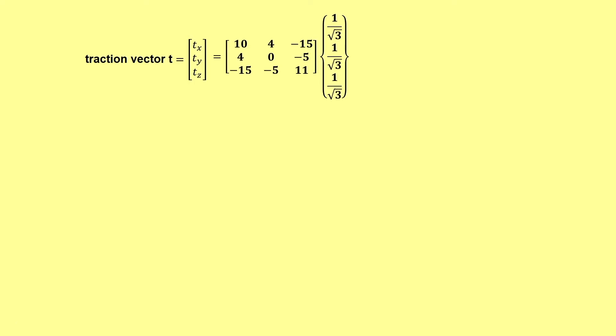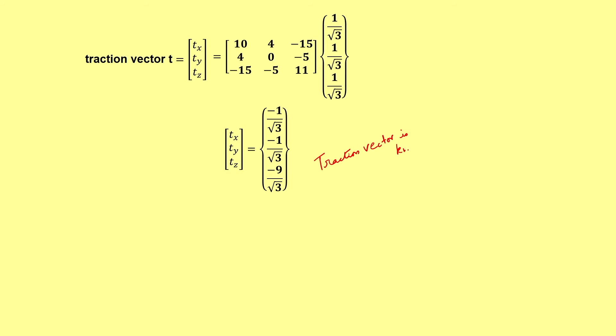Doing the matrix multiplication, one gets tx, ty, tz equal to −1/√3, −1/√3, −9/√3. For example, since all normal components are 1/√3, it is 10 plus 4 = 14, minus 15, giving minus 1. Similarly, all other components are obtained. The traction vector is now known.